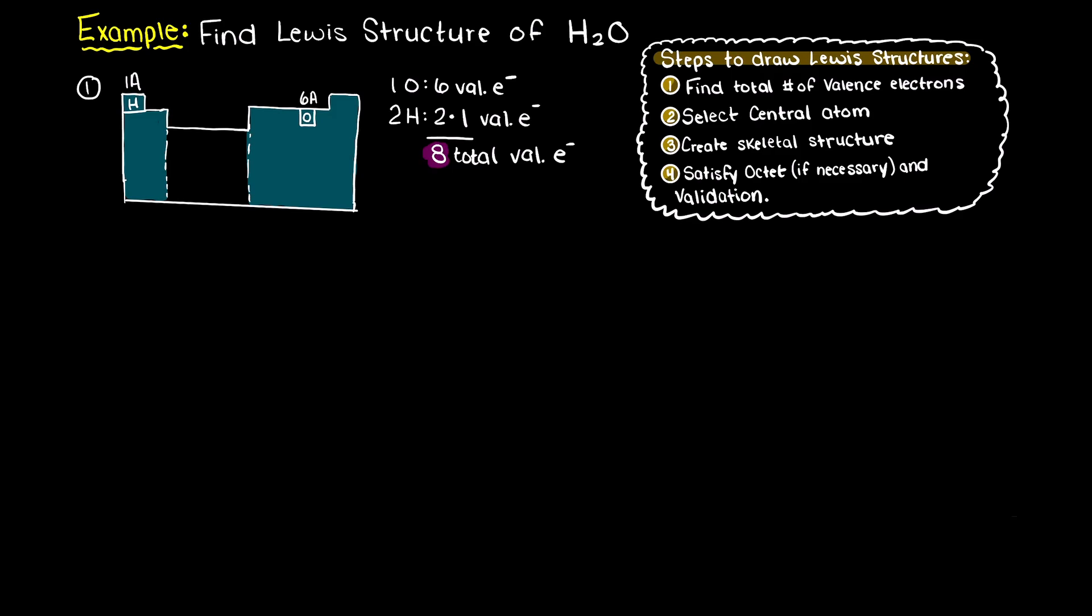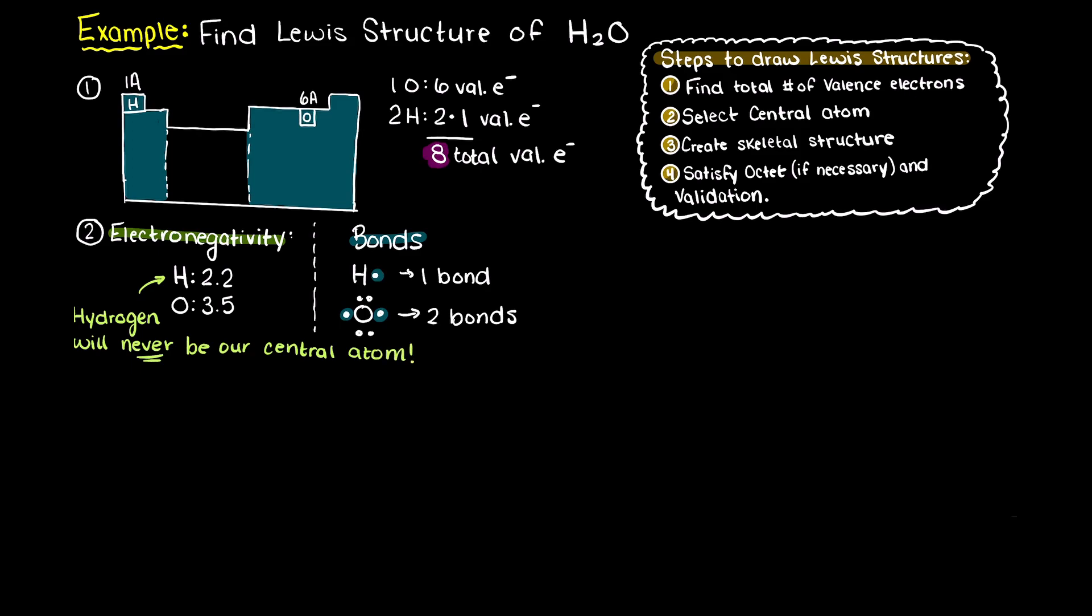Next we need to find what is going to be our central atom. I have listed the electronegativities of both hydrogen and oxygen here. Remember that we typically use our least electronegative atom as our central atom. However, as is common in chemistry, there are exceptions to our rules. Hydrogen is one of those exceptions and will never act as a central atom, as it can only make a single bond. Whereas our oxygen atom can make two bonds and is therefore preferable as our central atom.